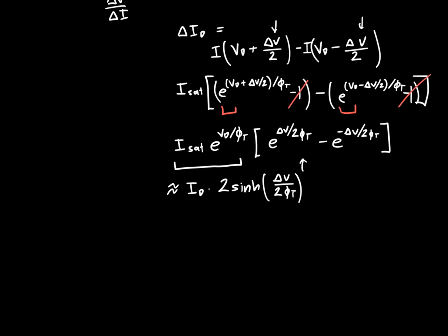So we get Id times 2sinh(ΔV/2φt). While we're in the business of making approximations, let's make another one. If delta V is much less than 2φt—and remember φt is about 26 millivolts, so this is saying delta V is much less than 50 millivolts or round about 50 millivolts, which may or may not be reasonable—then delta I is approximately just the DC current times 2 times delta V over 2φt, because sinh(x) for small x is just approximately x.